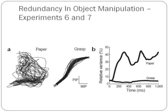The final types of experiments were done on redundancy and object manipulation. Experiment 6 tested the subject's ability to manipulate paper into a paper ball, and experiment 7 tested the subject's ability to grasp a cylindrical object. Although great variance difference is shown between the two tasks, both tasks show that the variance is much lower relative to the trajectory model.